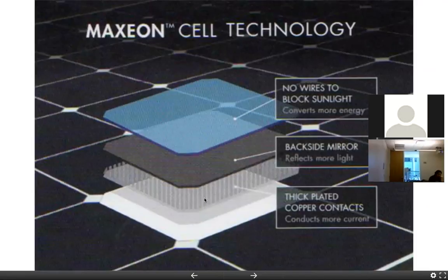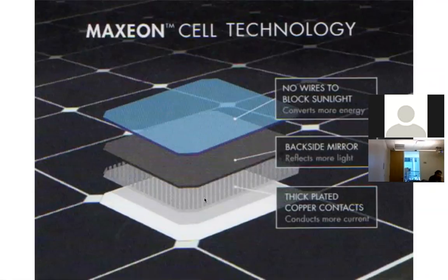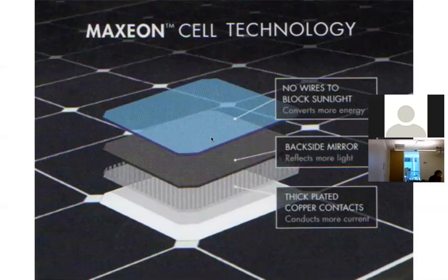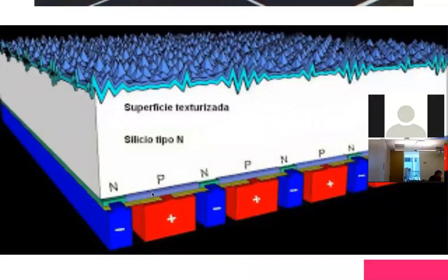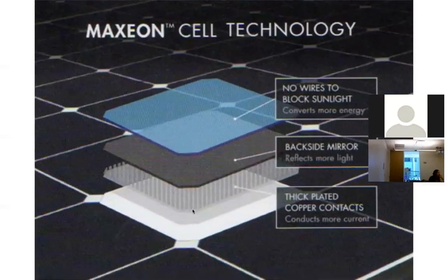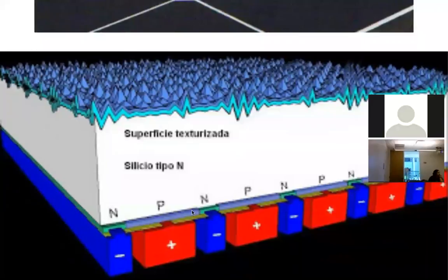They also make very thick plated copper contacts at the bottom, which reduces the contact resistance so you avoid contact resistance losses and get more power out. Now looking at the p-n junction in more detail: unlike a sandwich, the p and n regions are laterally spaced — p here, n here — and the contacts are at the bottom: positive contact, negative contact, and so on.